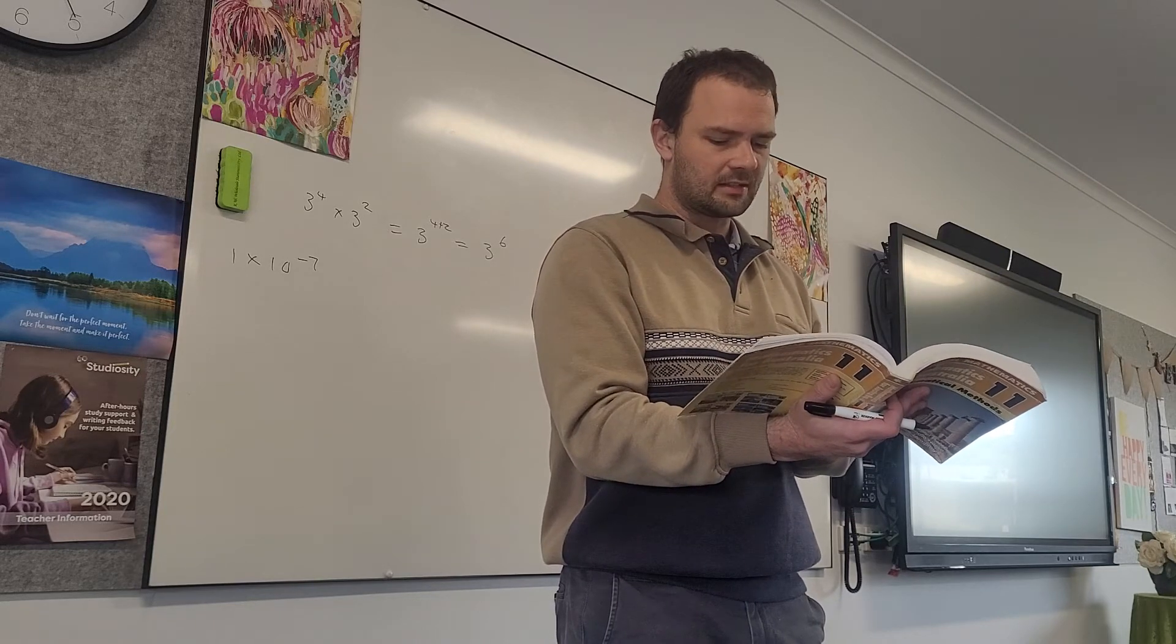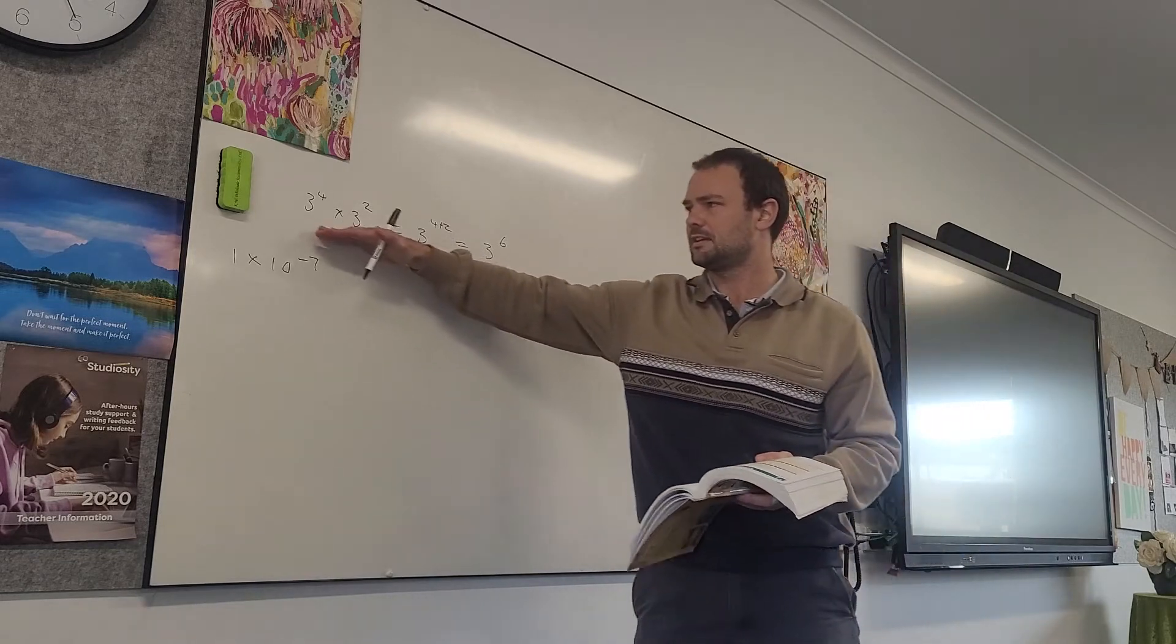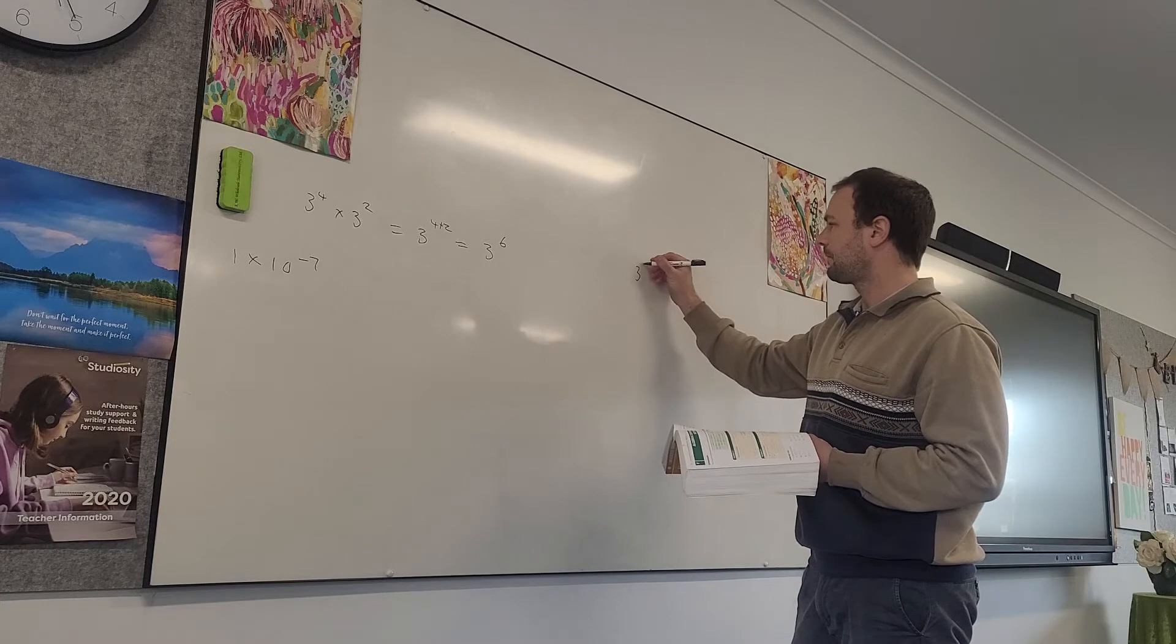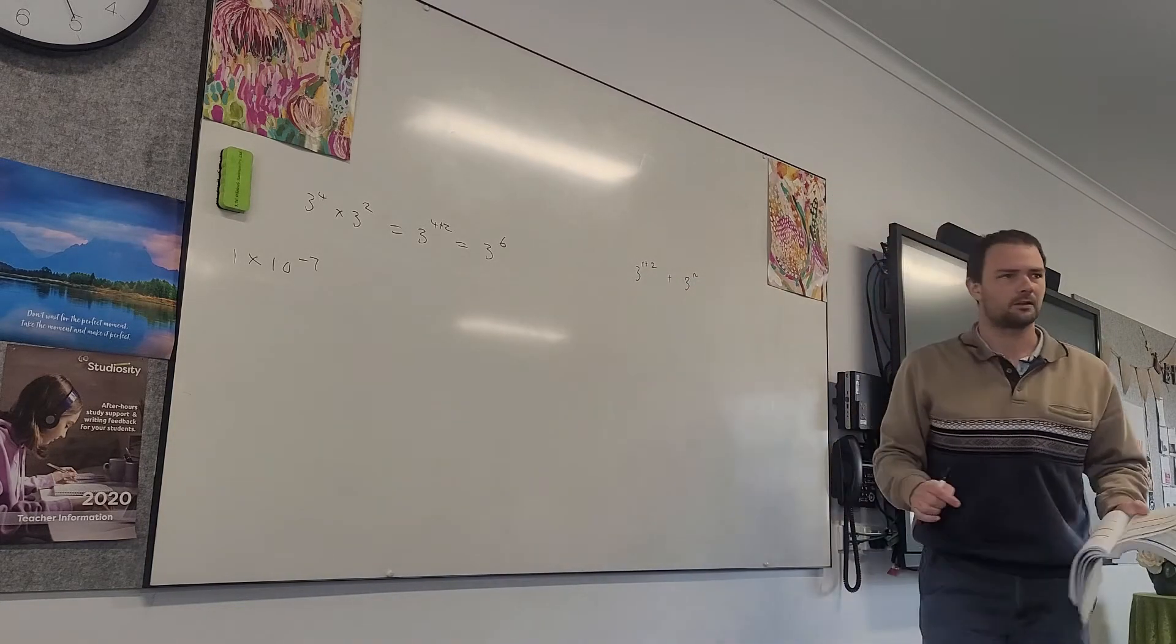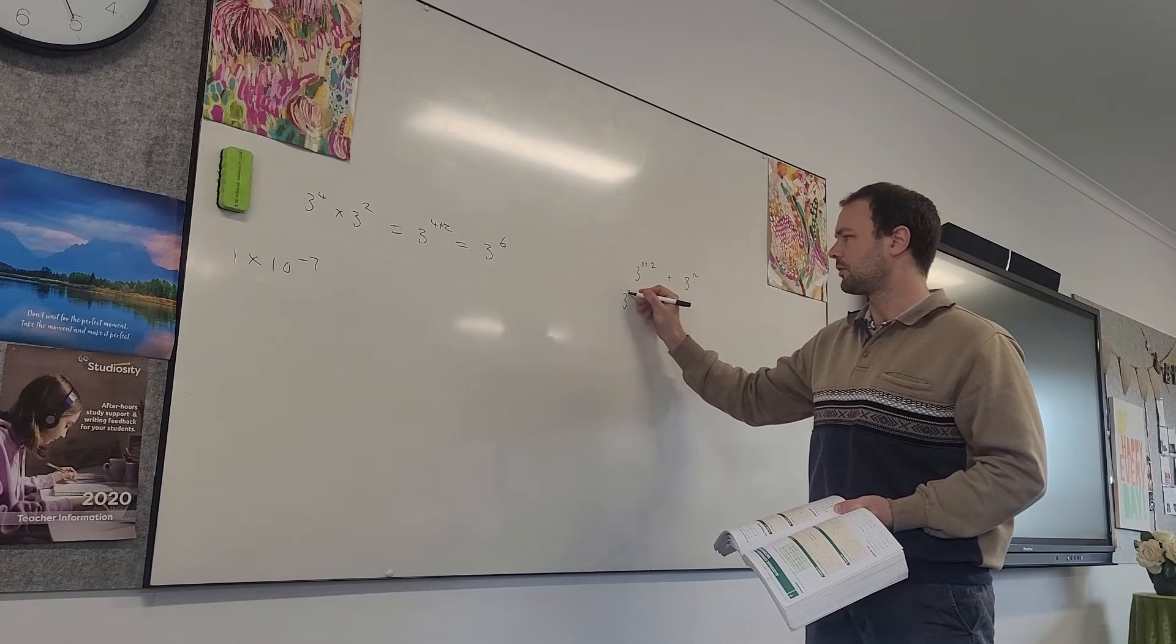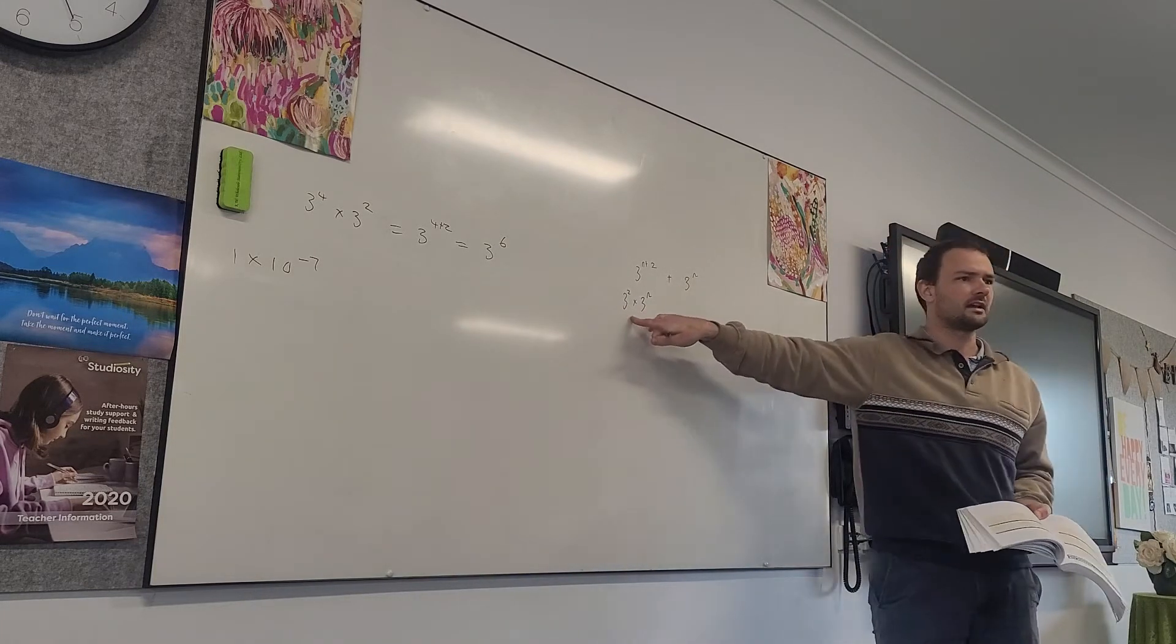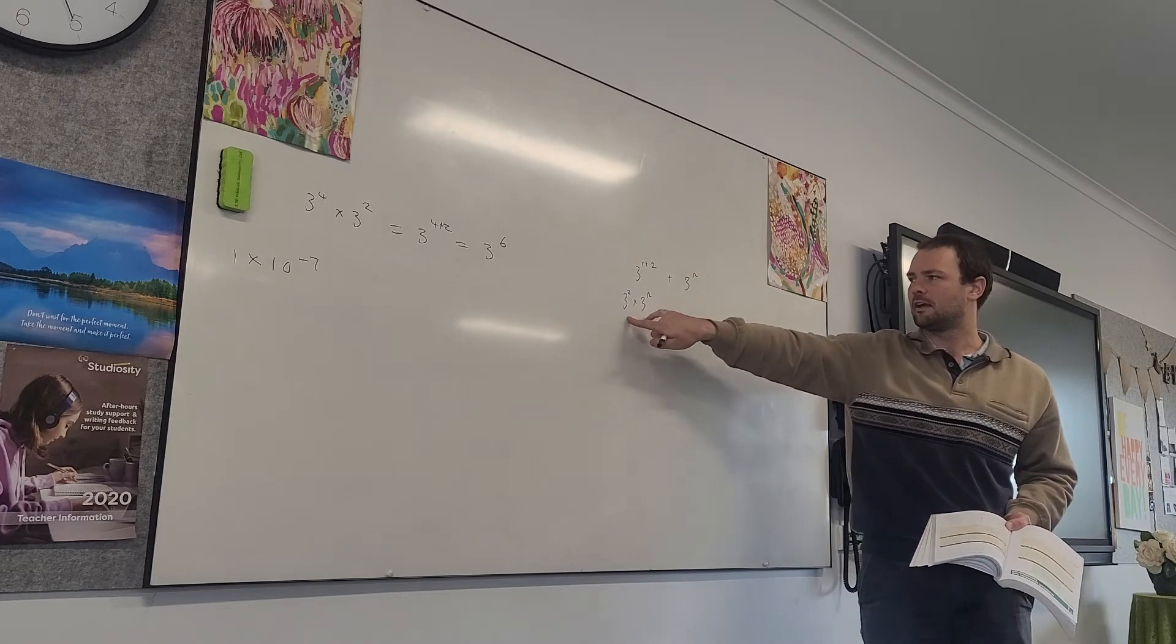When we've got factorization, it gets a little bit trickier. That's where we're recognizing the index law going back the other way. So let's do this example here together. We have 3 to the n plus 2 plus 3 to the n, and we want to factorize it. What we should recognize here is that this number, 3 to the n plus 2, is equal to 3 to the 2 times 3 to the n. That's the backwards index law. If you go forward, that's what you get. If you go back the other way, that's what we get.